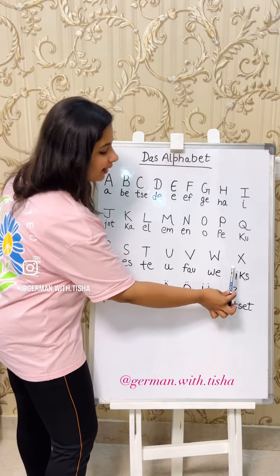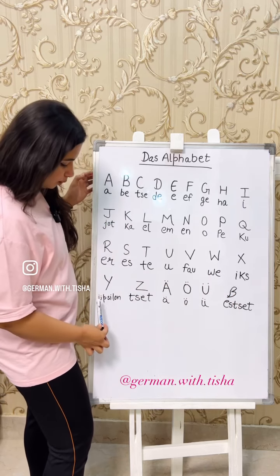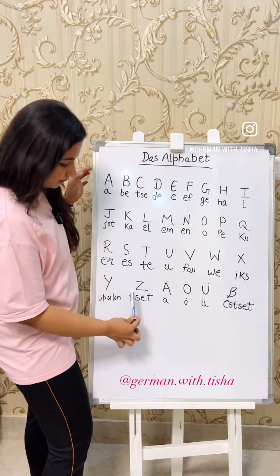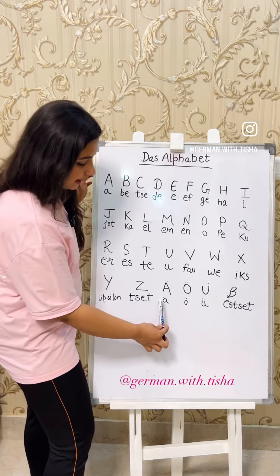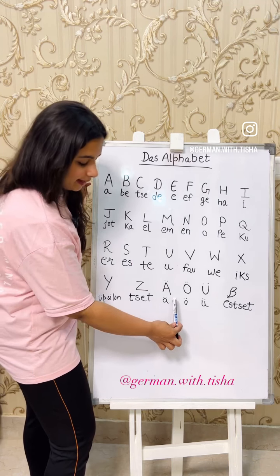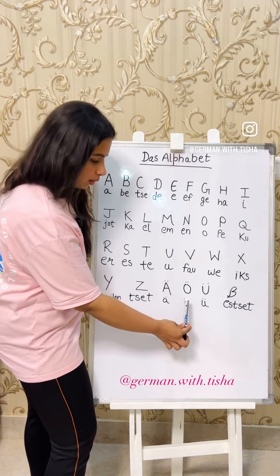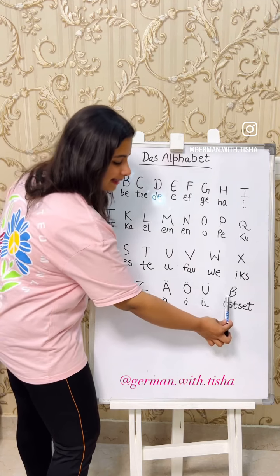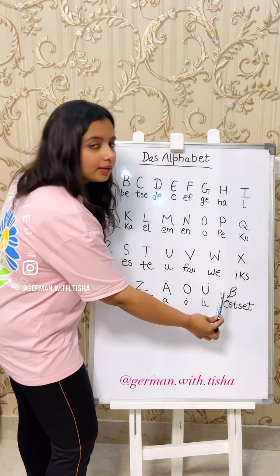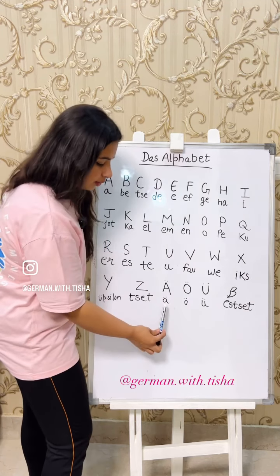W, X, Y, Z, Ä, Ö, Ü, ß — double S. So these are the 4 extra characters.